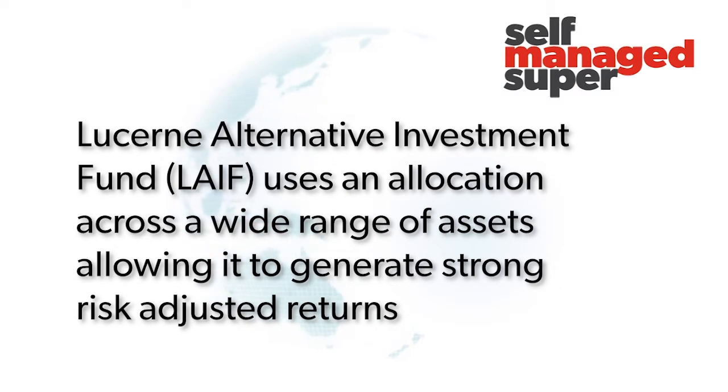The Lucerne Alternative Investments Fund has allocations across all those asset classes and as a result achieves very strong risk-adjusted returns. For the return you're getting, the risk you're taking is quite low. For example, the fund's returns in 2021 and 2020 were above 20% for both years, while the risk was sitting at around 6 or 7%, compared to equities markets with volatility sitting somewhere between 12 and 14% depending on the year.